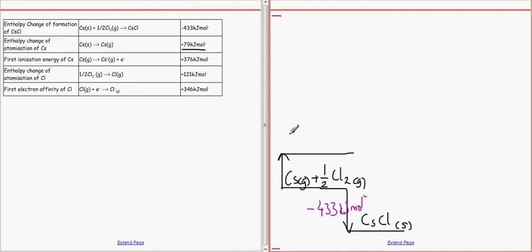So here we go, I've atomised. Why have I done that? Sorry, that's supposed to be a solid. That's supposed to be a solid plus half Cl2. So I've atomised that and then the change here would be plus 79 kilojoules per mole.